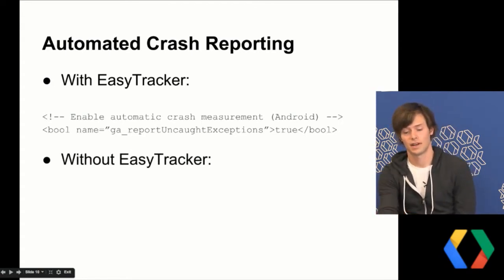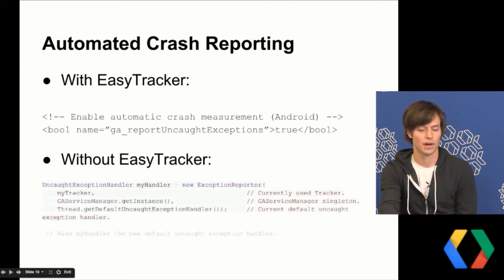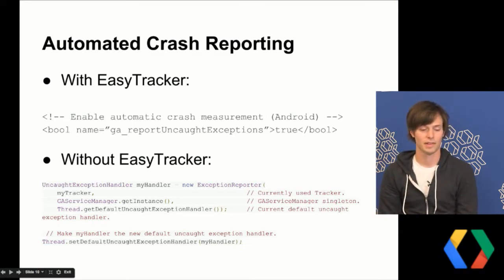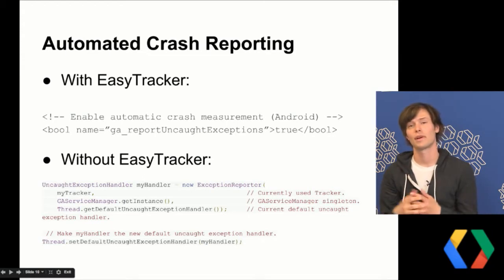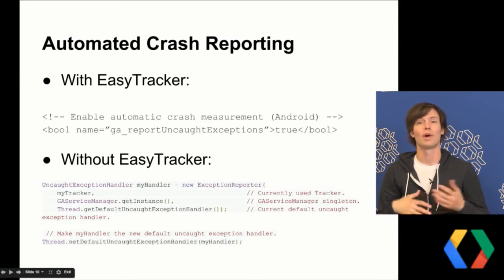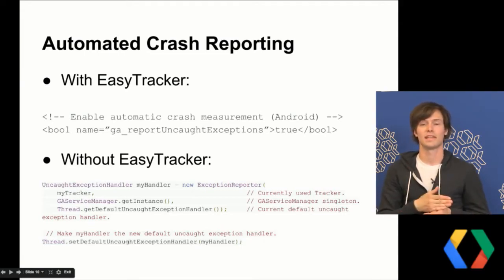Even without EasyTracker, with an advanced implementation, it's still pretty simple. The SDK provides a class called ExceptionReporter. You create a new instance of ExceptionReporter, give it the current default UncaughtExceptionHandler, and then set that ExceptionReporter as your new default UncaughtExceptionHandler. When there's an uncaught exception, the GA ExceptionReporter picks it up, tracks and dispatches the exception, then hands it over to whatever the previous default handler was — meaning crash data still gets sent to Google Play if needed, and the app exits as normal.